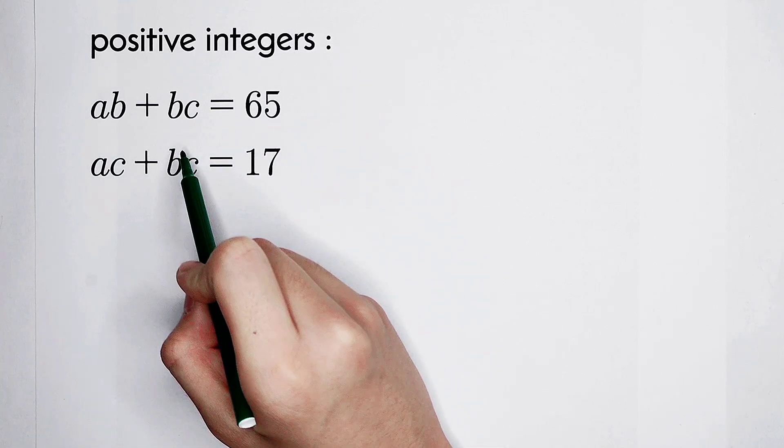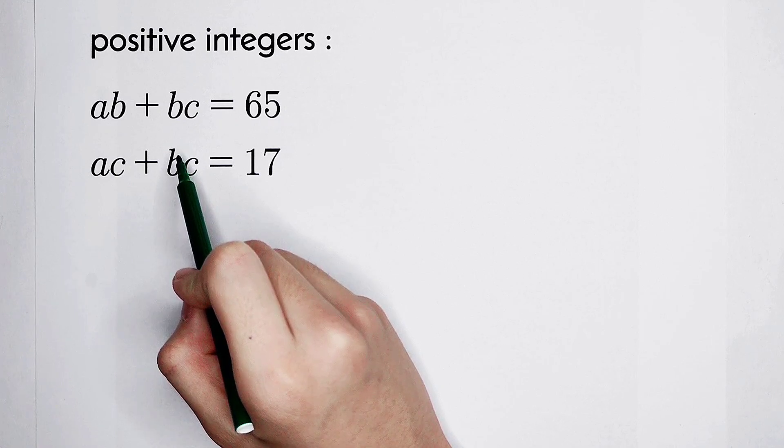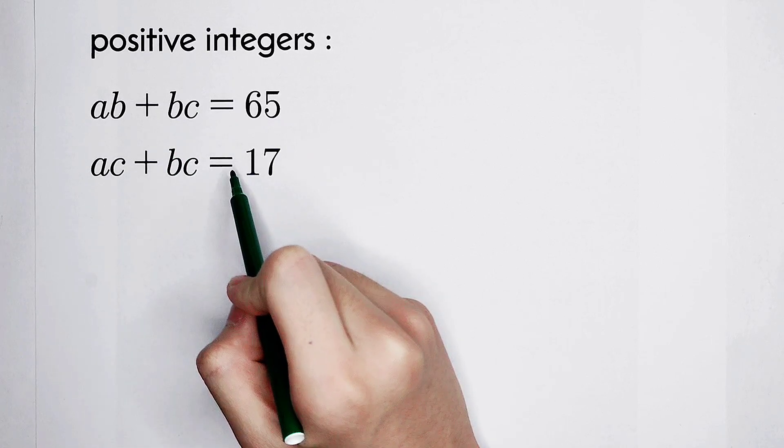The left-hand side, we can take out b. That is, b times bracket a plus c.